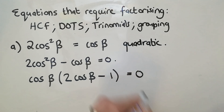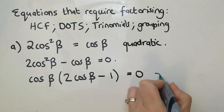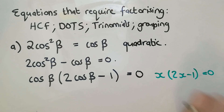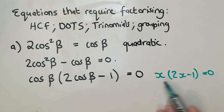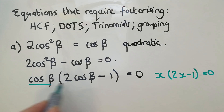To prove you've done this kind of factorizing before — just with different terms — if you had x(2x minus 1) equals zero, you'd recognize that x equals zero or 2x minus 1 equals zero. All I've done is replace x with cos beta.